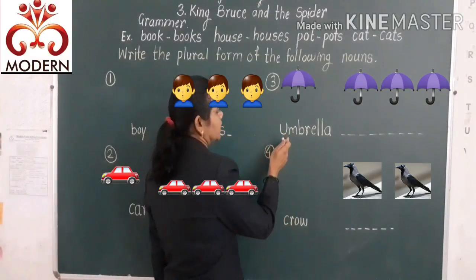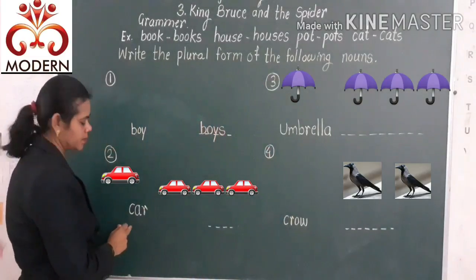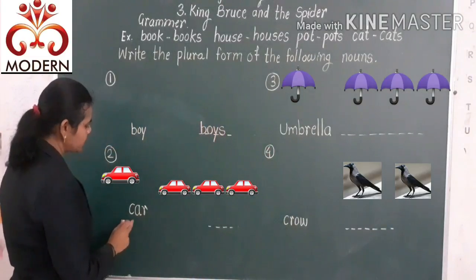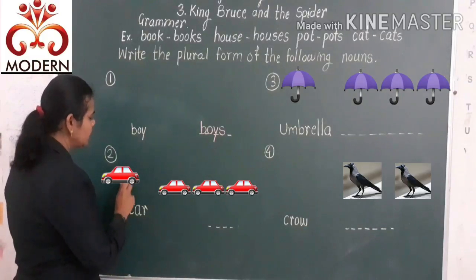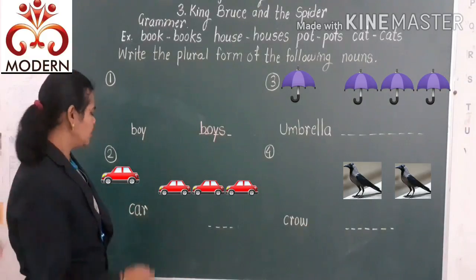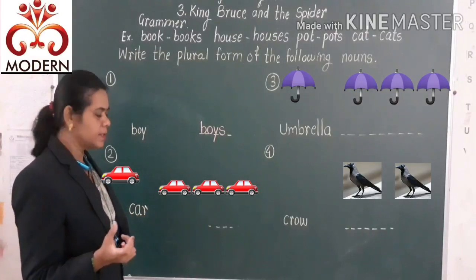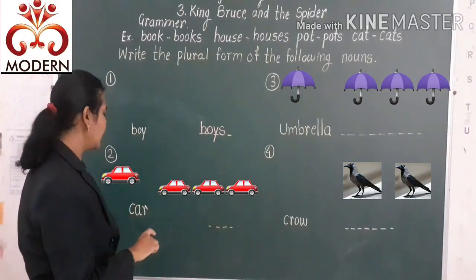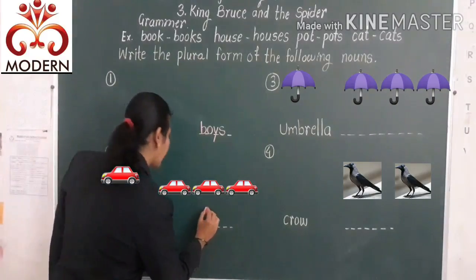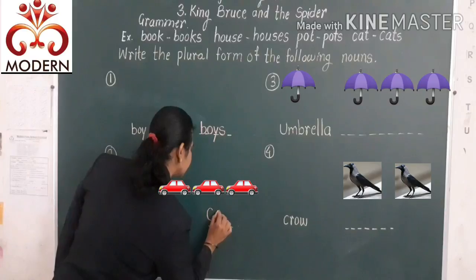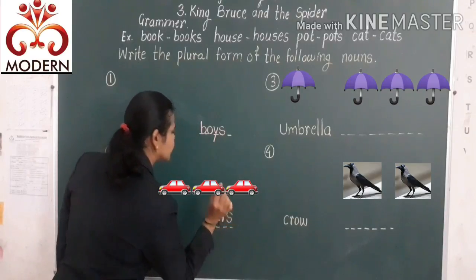The next example is 'car' — C-A-R. Here, given one car. When more than one, we add 's' to the common noun: C-A-R-S — cars.